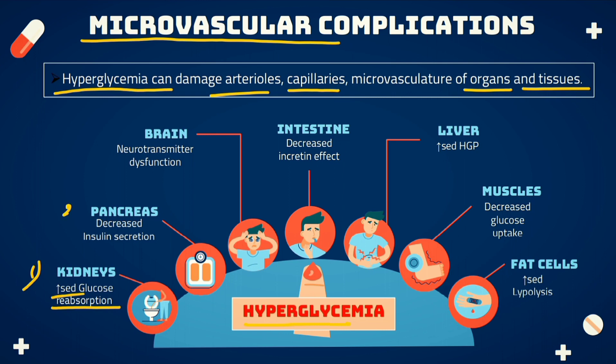In the pancreas, there is a decrease in insulin secretion. In the brain, there is dysfunction in the neurotransmitters. In the intestine, there is a decrease in the incretin effect.